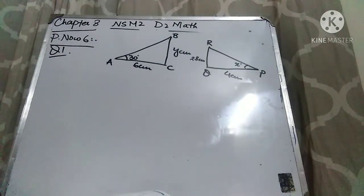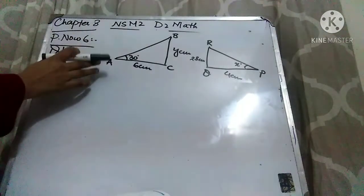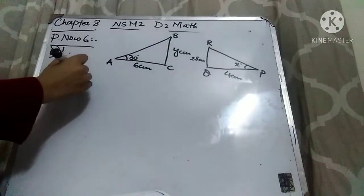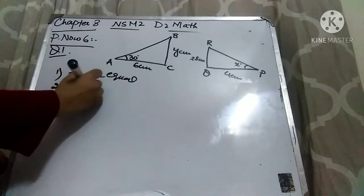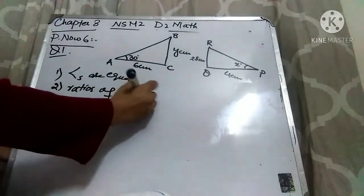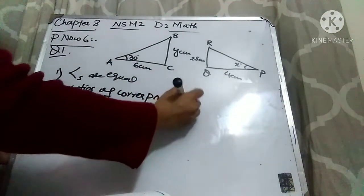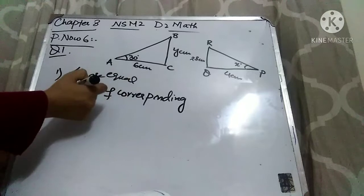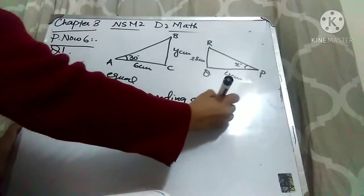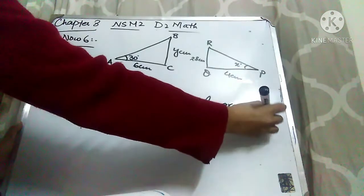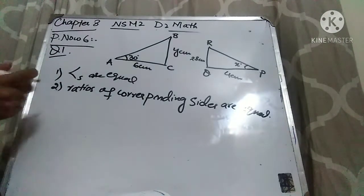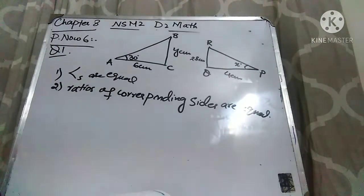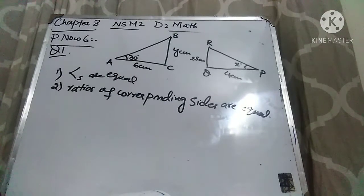Here it has been told that the figures are similar. Two figures are similar if their angles are equal and the ratios of corresponding sides are equal. These are the two conditions when figures are similar. We have to keep these in mind to find the unknowns. There are two unknowns, X and Y — X is at an angle and Y is on a side.